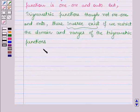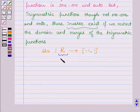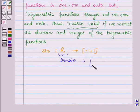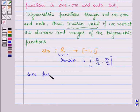Let us first discuss the sine function. We know that the domain of the sine function is the set of all real numbers and its range is the closed interval minus 1 to 1. If we restrict the domain to the closed interval minus pi by 2 to pi by 2, we find that the sine function becomes 1-1 and onto, and then its range would be closed interval minus 1 to 1.